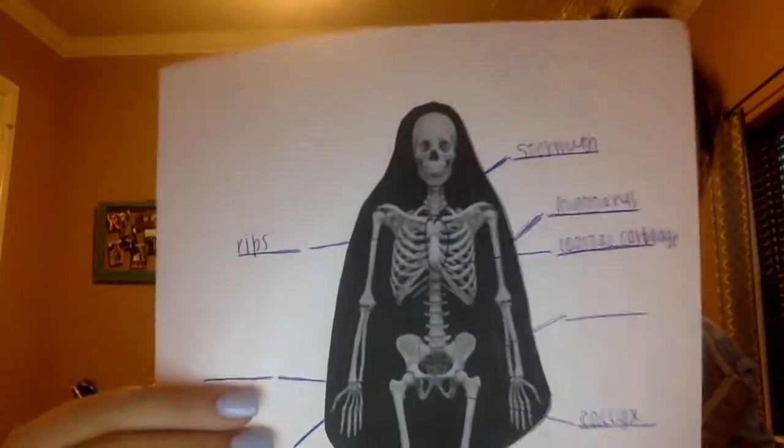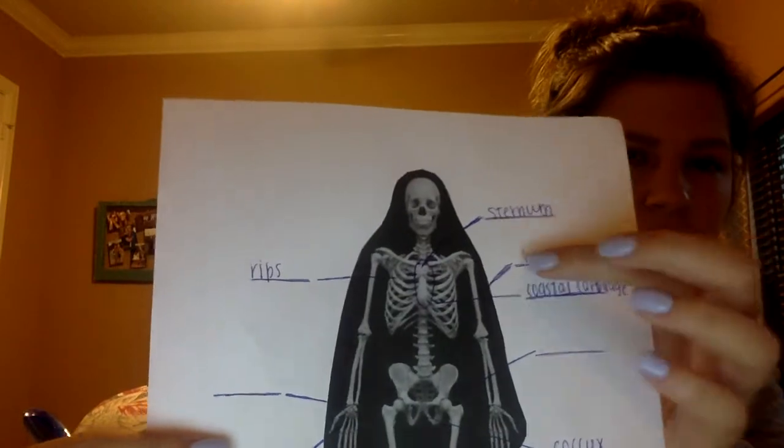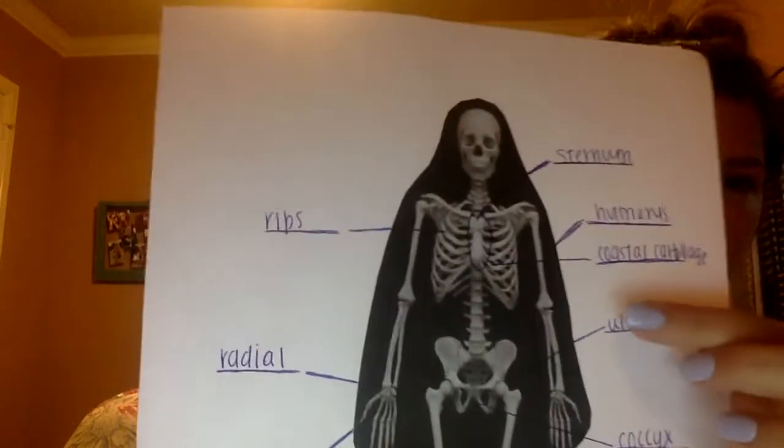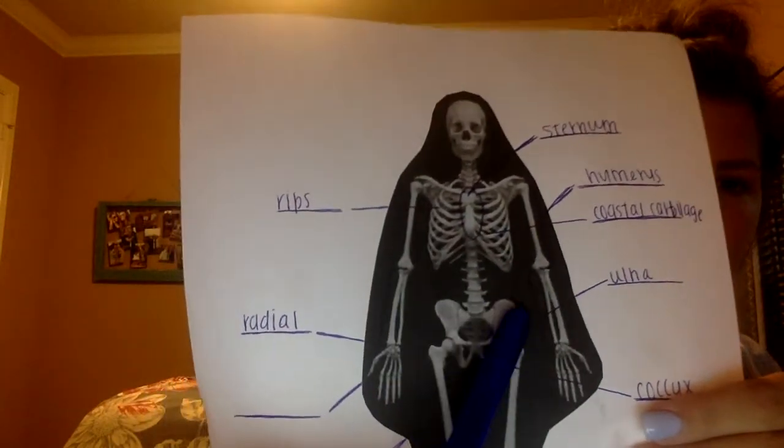Now for the appendicular region of our skeleton, I'm going to start with the upper limbs. First we have our humerus, which is the top half of our arm, superior to our elbows. And below the elbow, we have our radius and ulna. The radius is the lateral or outer part of our forearm, and the ulna is the medial or inner part of our forearm, as you can see where I have those labeled.